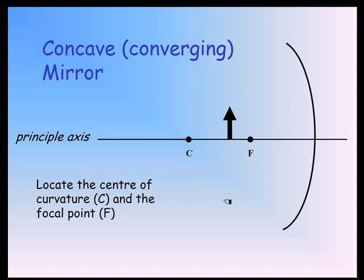Here's our object, and it has a certain height, HO, for height of the object. In order to find out where the image is, we do three lines. We really only need two, but it makes a better diagram with three.